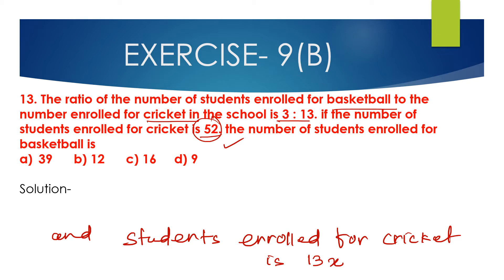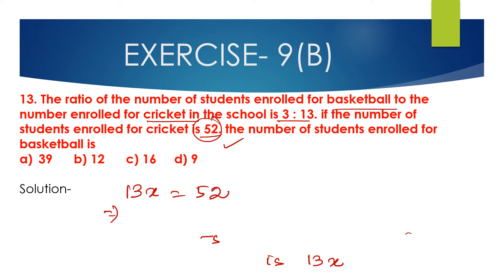It is given that the number of students enrolled for cricket is 52, that is 13x is equal to 52. So x will be 52 divided by 13, which is equal to 4.